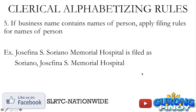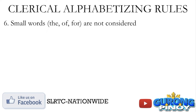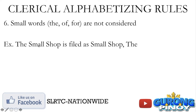Rule number six: small words such as 'the,' 'of,' or 'for' are not considered in alphabetizing. For example, your shop is named 'The Small Shop' — this is just filed as 'Small Shop, The.' Yung mga maliliit na words like the, of, or for ay hindi po binibigyan ng gaanong emphasis.